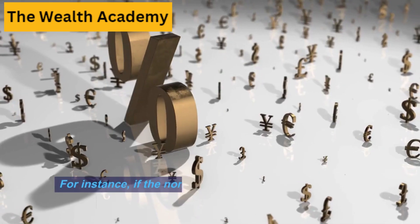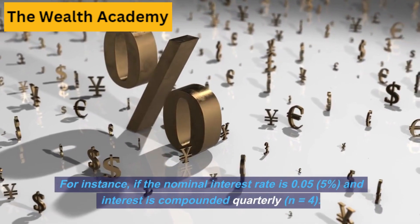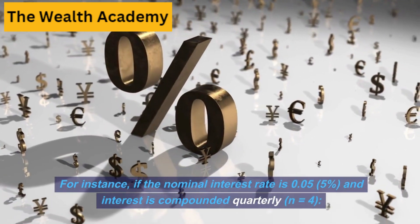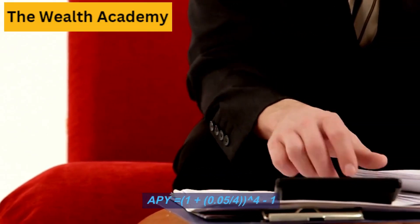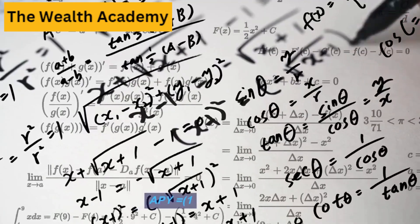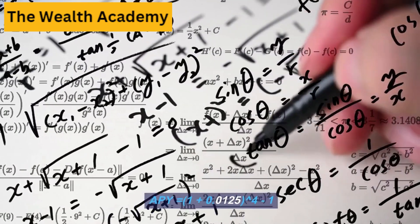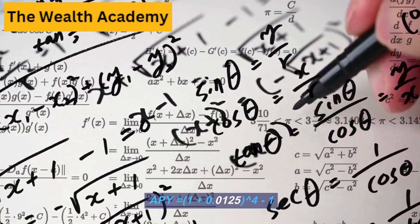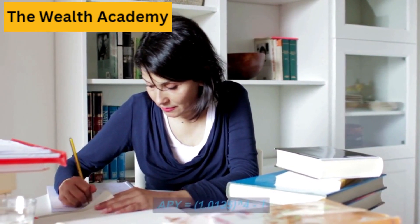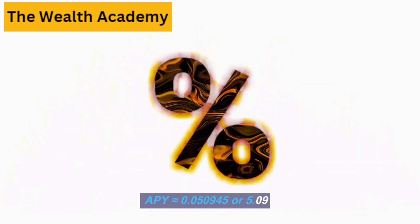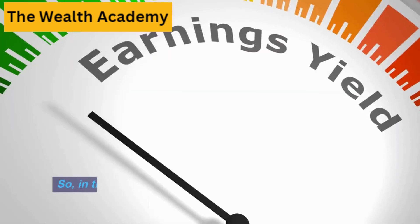Use the formula to calculate the APY. For instance, if the nominal interest rate is 0.05 (5%) and interest is compounded quarterly (N=4): APY = (1 + 0.05/4)^4 − 1 = (1.0125)^4 − 1, which approximately equals 0.050945, or 5.09%.